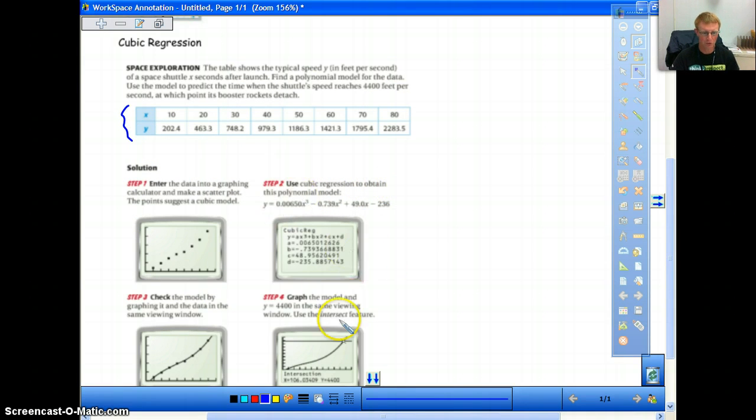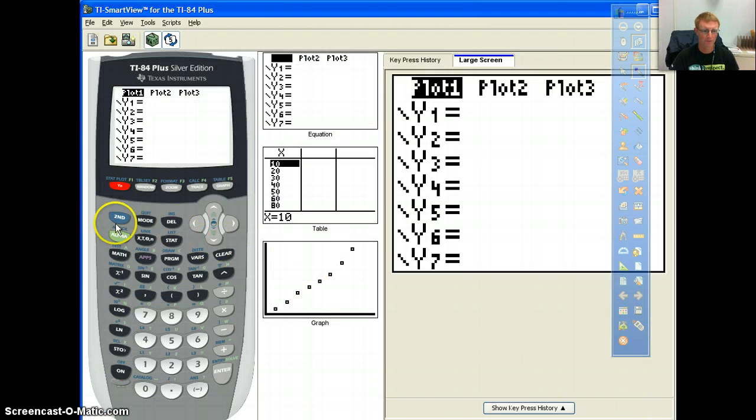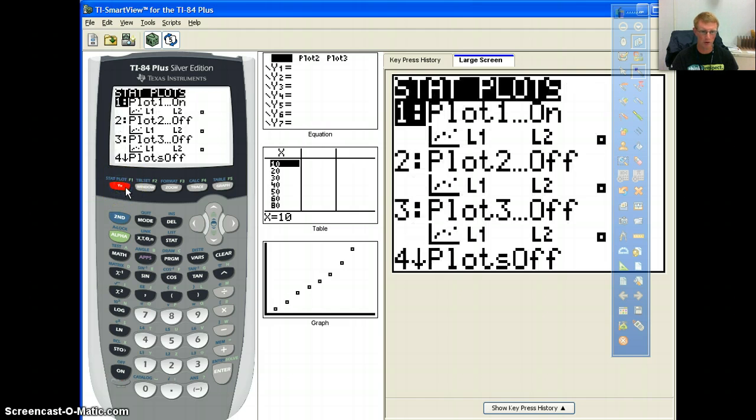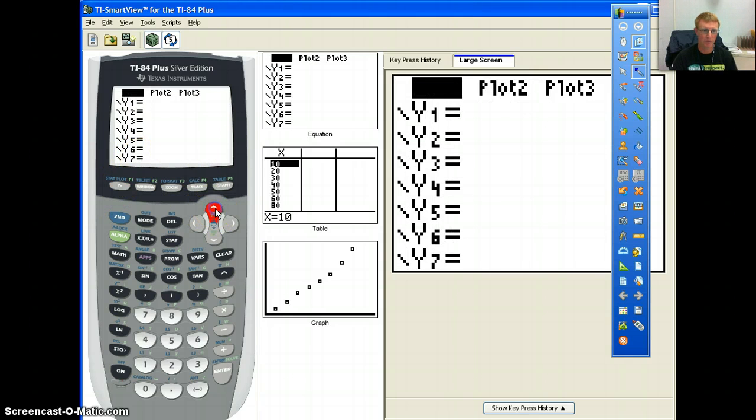So the first thing is, when we open up the graphing calculator, the first thing you want to make sure is if we go to second and then stat plot, because that's what we're doing - we're plotting data, so we need to go there. So the first thing you would do is you go to stat plot, you want to make sure that your plot one is on, because we're only going to do one set of data. Now, the other way to do this is if we go to our y equals, you will notice above you have these plot one, plot two, and plot three. If those are highlighted, then that means that it's on. You notice that plot one is already on, so it's highlighted.